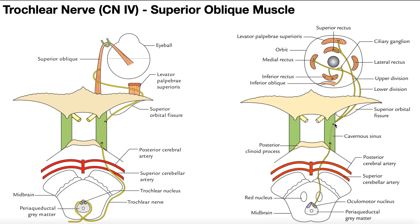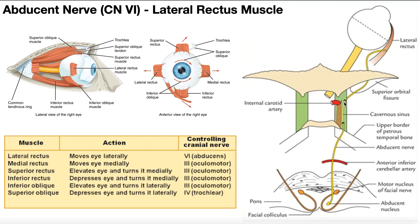They're both also going to exit the cranium through the superior orbital fissure, which is a hole in the sphenoid bone that allows structures to enter the orbit where the eye is. The abducent nerve exits the cavernous sinus, moves through the superior orbital fissure — exiting the cranium and moving into the orbit — and there you can see it moving to the lateral rectus muscle, where it innervates that muscle. Through contraction of the lateral rectus muscle, we get abduction of the eye, or lateral movement of the eye.